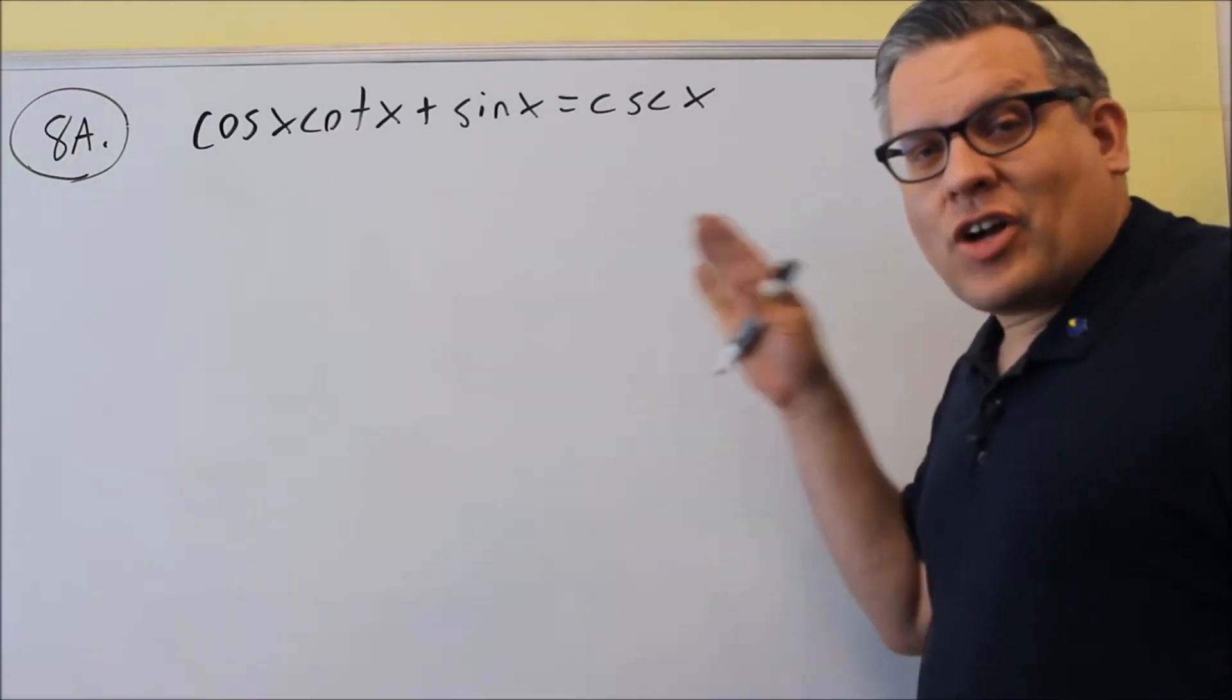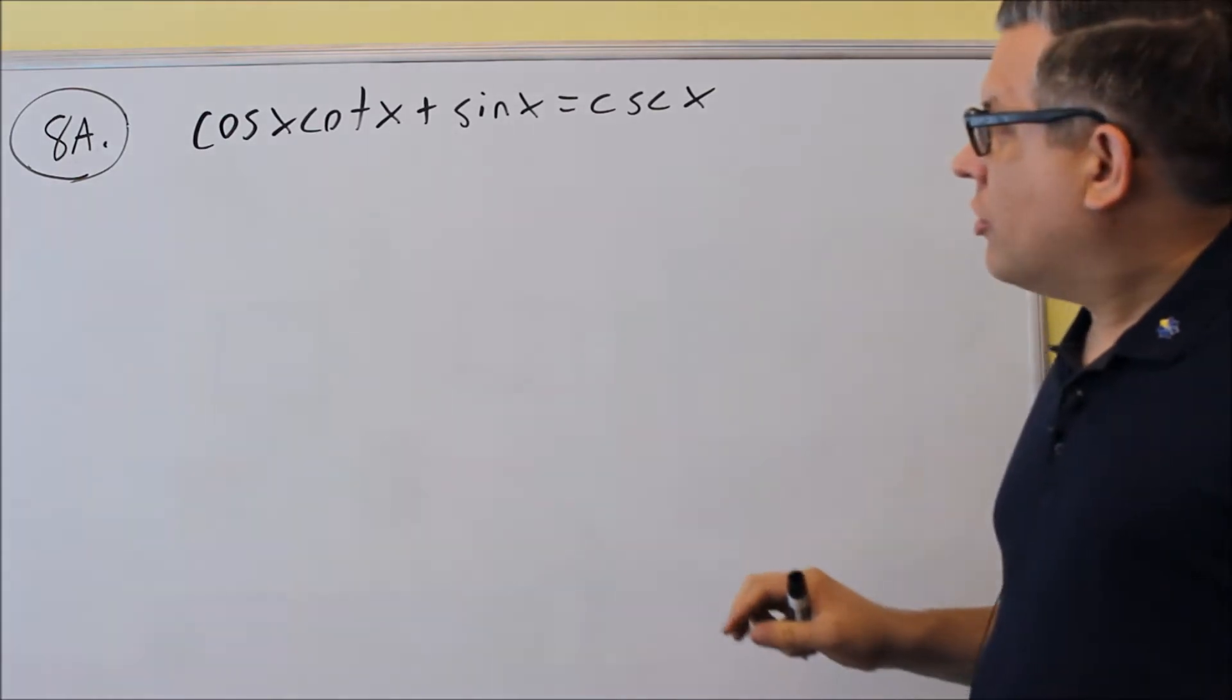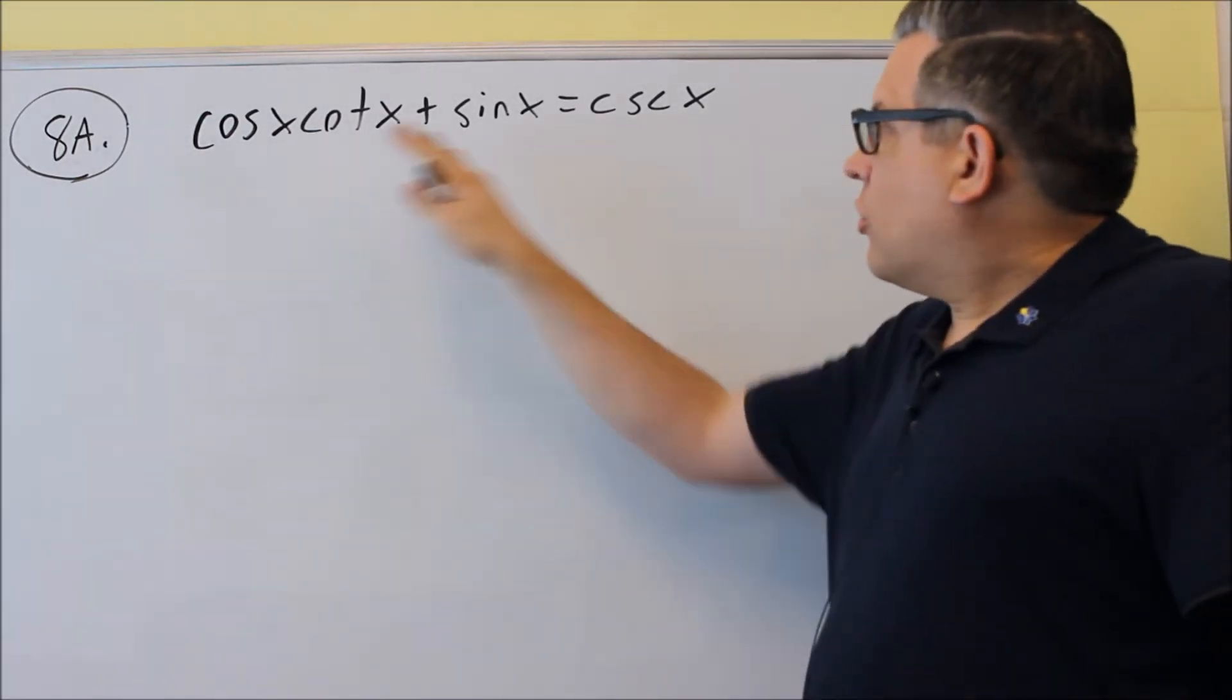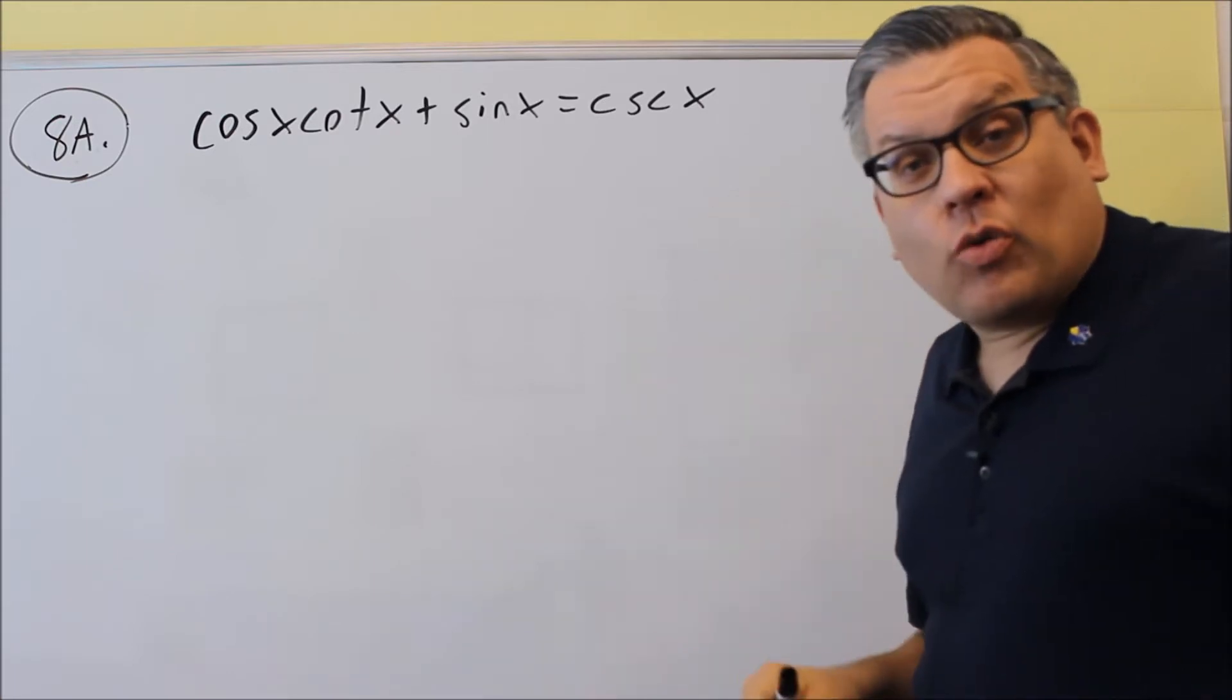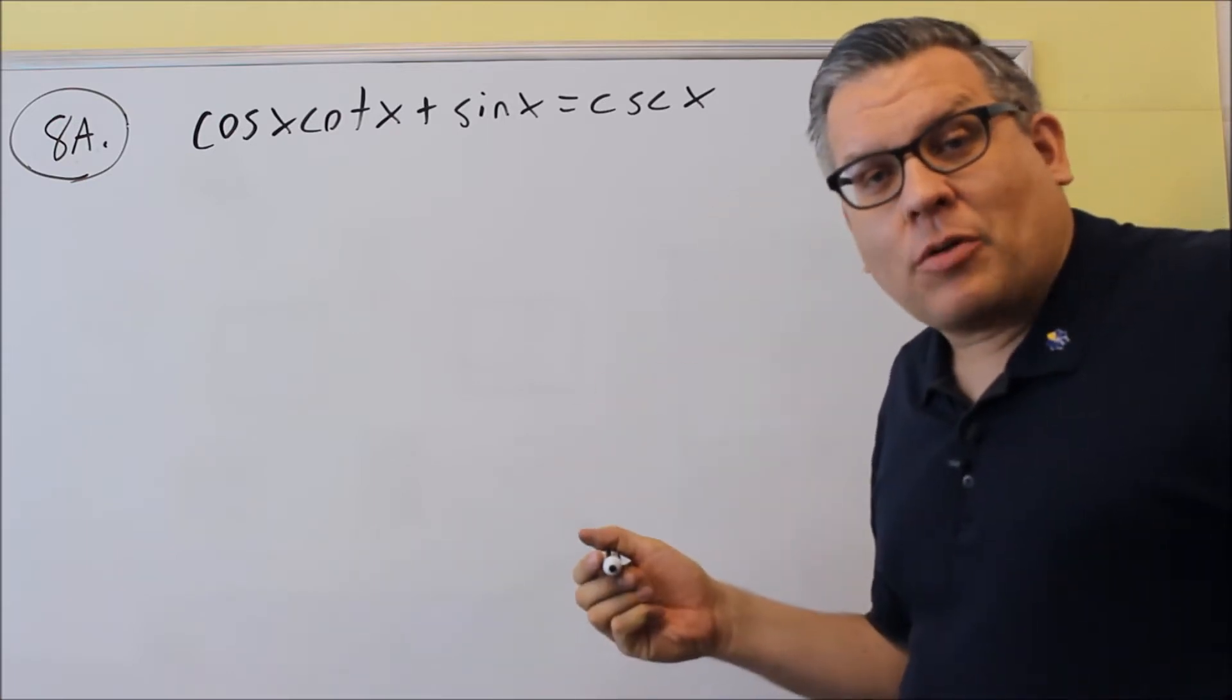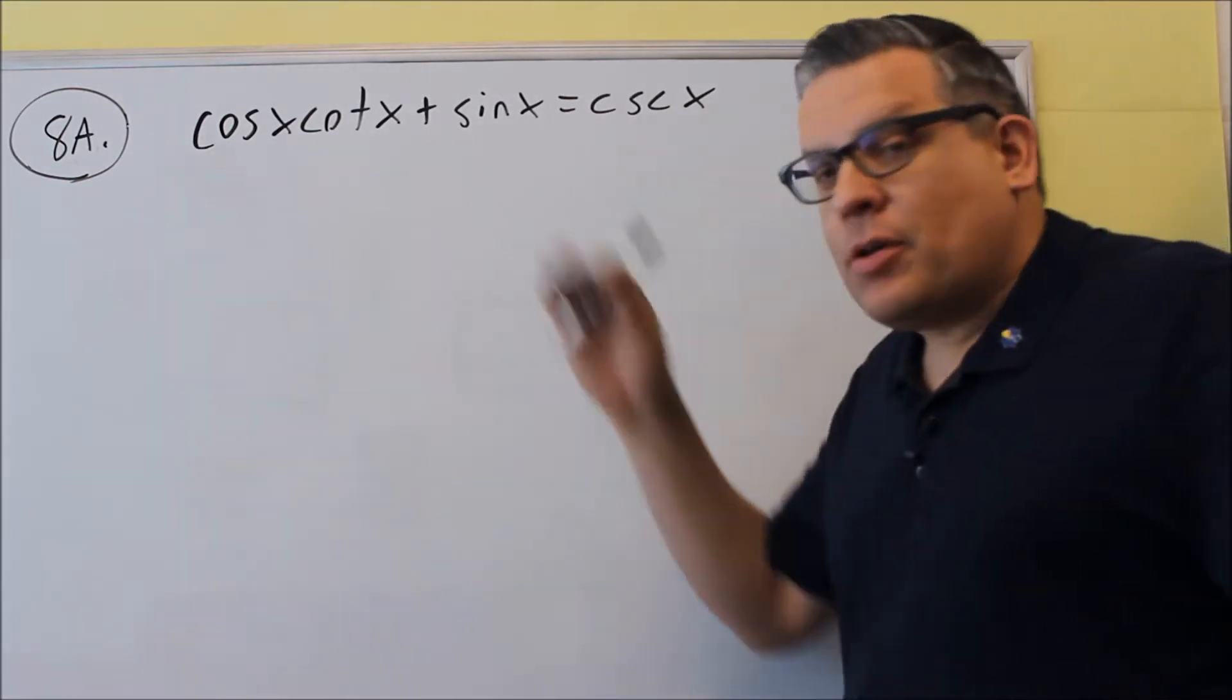Okay, for number eight, it's going to ask to verify the identity. Now verifying the identity means that you want to put some identities in here, work out both sides to where one side equals the other. There may be more than one way of doing these type of problems. I'm going to show you one particular way that you can do it, but it may not be the only answer.